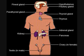Oxytocin. Gland: Posterior Pituitary. Function: stimulates uterine contraction and milk ejection during suckling.